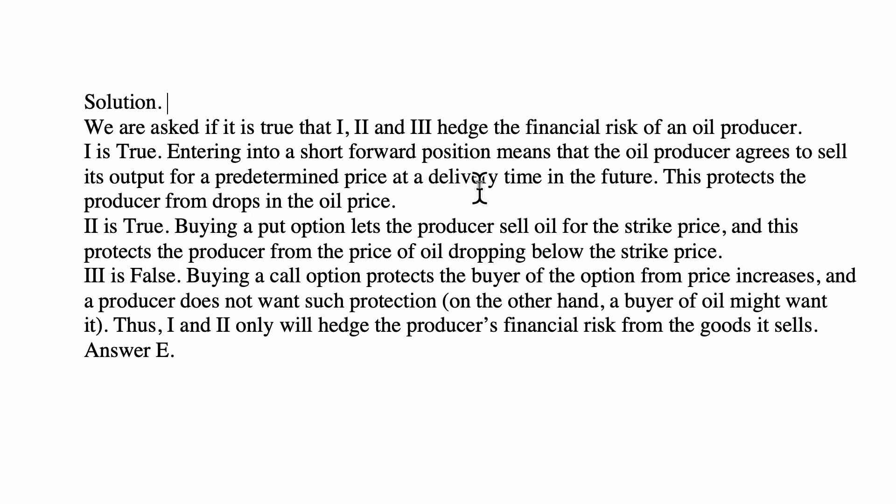And here's the solution. We are asked if 1, 2, and 3 hedge the financial risk of an oil producer — the risk being that this oil producer will need to sell its output in the future. 1. True. Entering into a short forward position means that the oil producer agrees to sell its output for a predetermined price at delivery time in the future. This protects the producer from drops in the oil price. 2. True. Buying a put option lets the producer sell oil for the strike price, and this protects the producer from the price of oil dropping below the strike price.